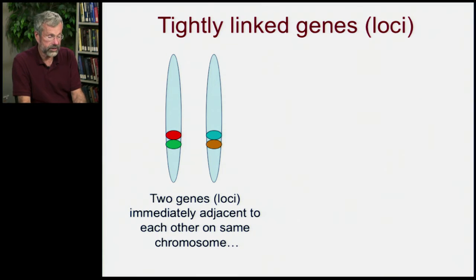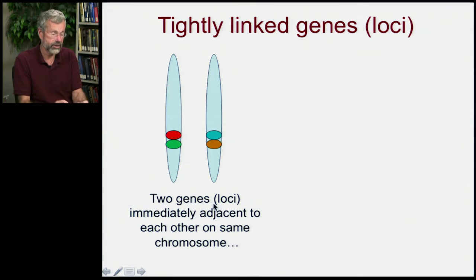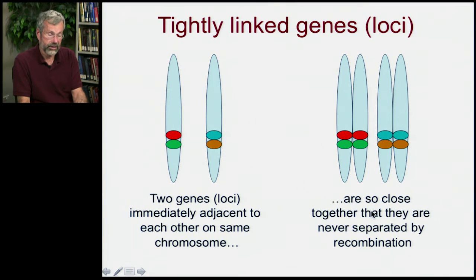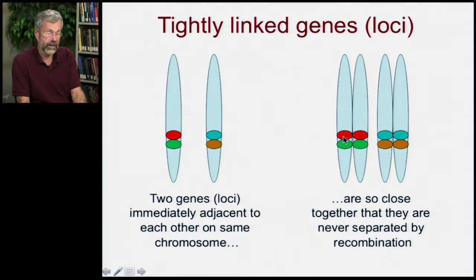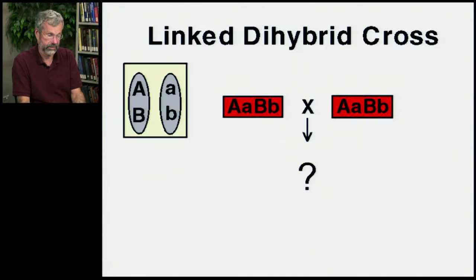We have two genes — we also refer to genes as loci, that's the location on a chromosome. They're immediately adjacent to each other on the same chromosome, and they're so close together that they're never separated by recombination. We have here our homologous partners, then the sister chromatids for each, all together now in the tetrad. The green and red alleles are going to be passed on together and the blue and brown alleles are going to be passed on together because they're so tightly linked.